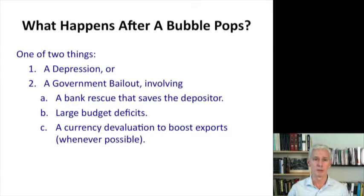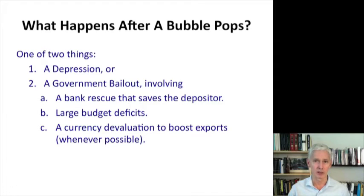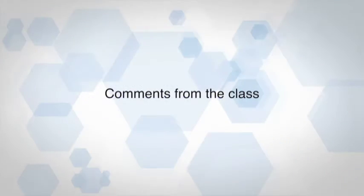So what happens when a bubble pops? One of two things: either there is a depression, or there's a government bailout. The bailouts include a bank rescue that saves the depositors, large budget deficits, and whenever possible, currency devaluation to boost exports. In the 1930s, when the bubble popped, there was a depression. This time, around the world, we've seen government bailouts. The U.S. government has had trillion-dollar budget deficits every year, financed by the creation of trillions of dollars of paper money. Don't you think there's something irresponsible about all this?